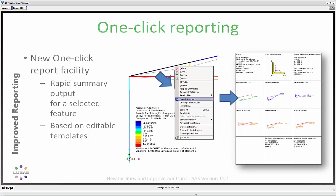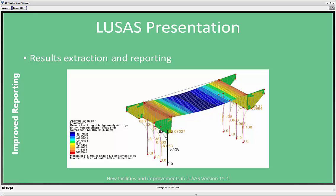OneClickMemberReport is something entirely new. The idea is that you can click on a single or a group of members and get a report which summarizes both input data and results information in a very handy, easy-to-view format. This format is based on a template, and the template can be edited. At this point, I'm going to hand over to Julian, and he'll take you through some of these specific facilities.